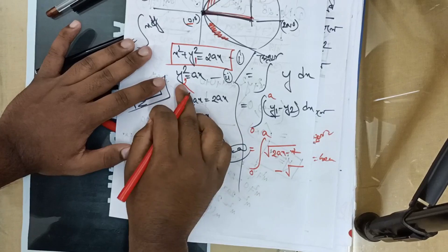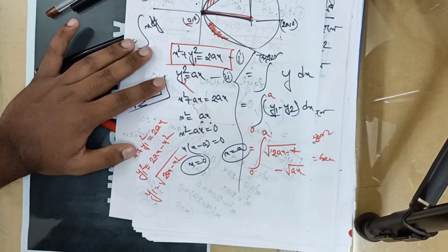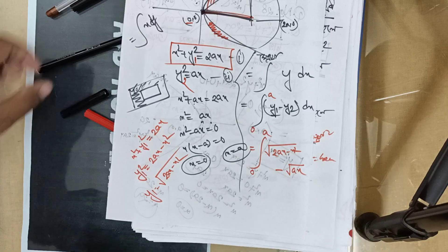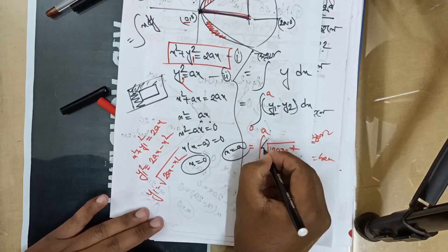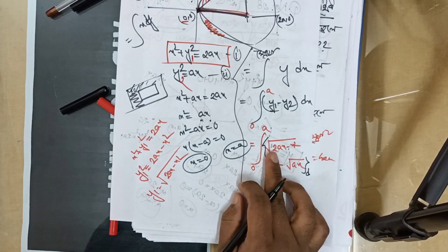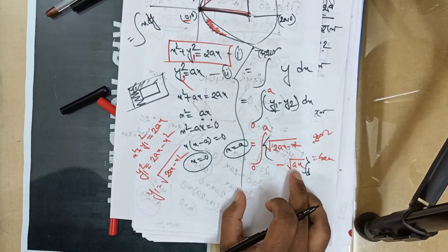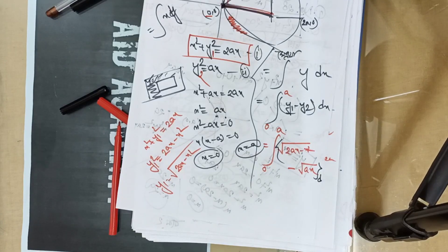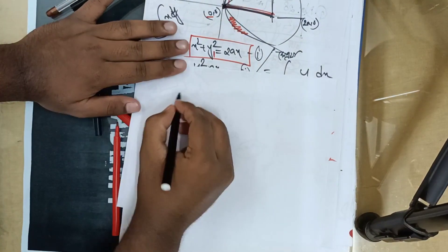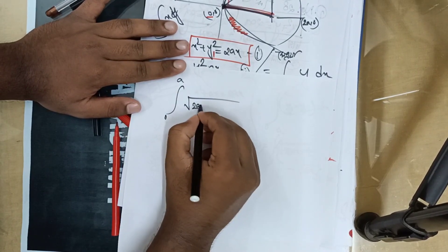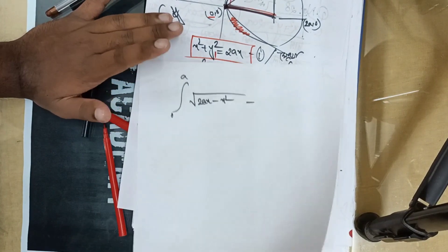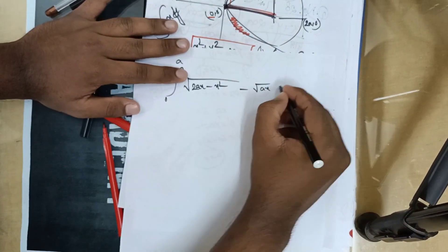Take the root. Just put in the value: root over ax. Then you do the integration. The result is root over 2ax minus x squared, minus root over ax. Integration from 0 to a of root over 2ax minus x squared minus root over ax, dx.